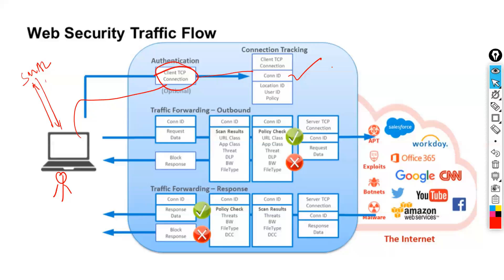Based on your user ID, location ID, and policy, all relevant policies are enforced — what kind of access is allowed, from which location you are connecting, what different policies apply per location, cloud firewall URL filtering, and user ID-based rules. Once authentication is done, connection tracking and connection ID are allocated, and you are ready to start actual data forwarding.